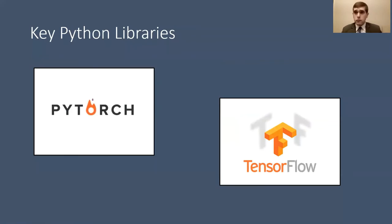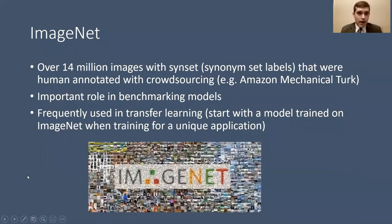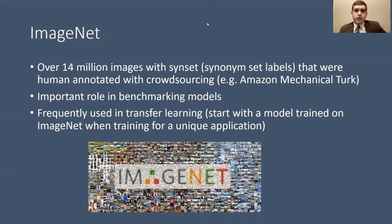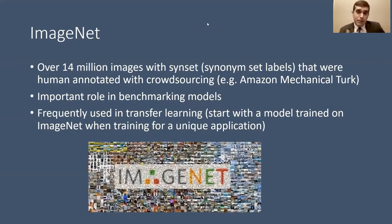If you're working in Python for training AI, the two key libraries are PyTorch and TensorFlow — I use both, with PyTorch a little more right now. ImageNet is a critically important dataset: over 14 million images with synset labels based on WordNet hierarchies, human-annotated via crowdsourcing tools like Amazon Mechanical Turk. It's hugely important for benchmarking and frequently used in transfer learning. In radiology especially, it's powerful to take a model trained on 14 million images and use that backbone for an application where you might not have that many cases.